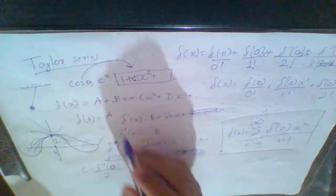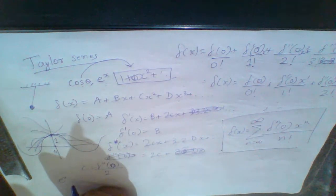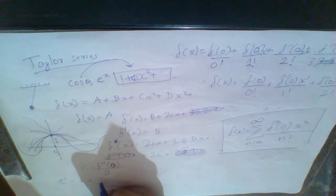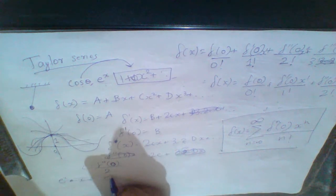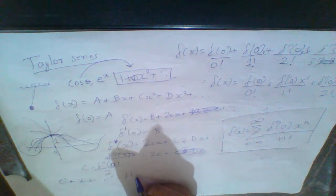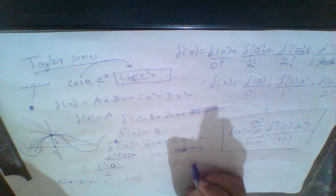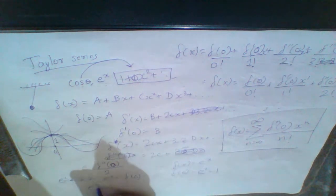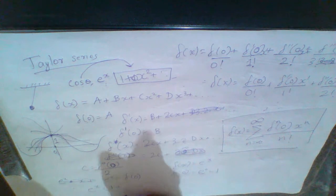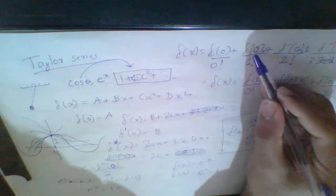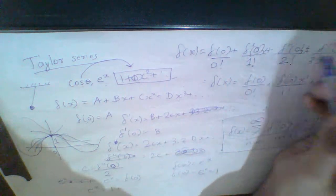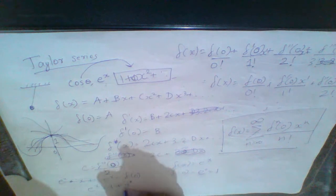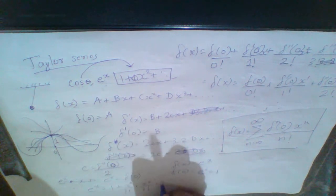Now we are going to find the Taylor series for e raised to x. For e to the x, f of x equals e to the x, and f of 0 equals 1. All derivatives of e to the x are also e to the x, so f of 0 equals 1 for all derivatives. This gives: 1 plus x by 1 factorial plus x squared by 2 factorial plus x cubed by 3 factorial.